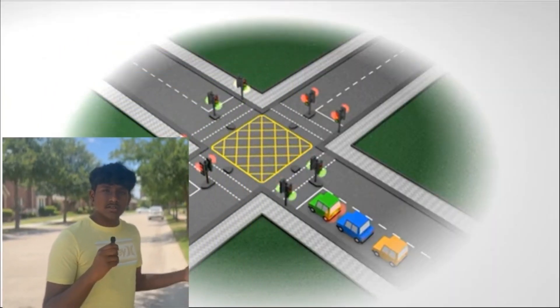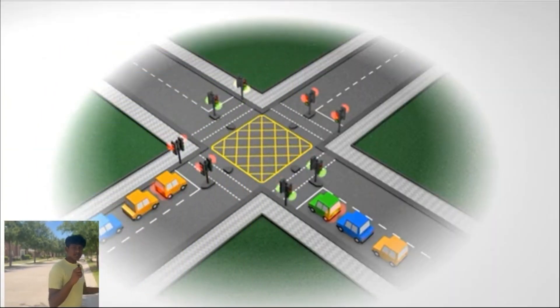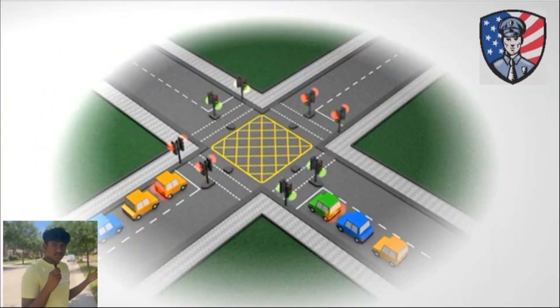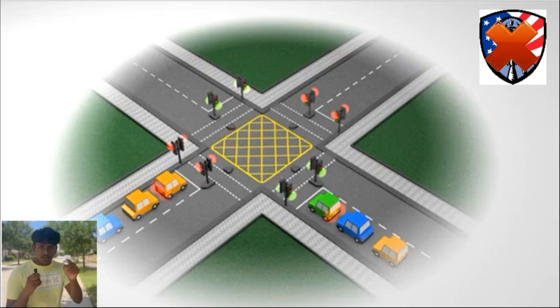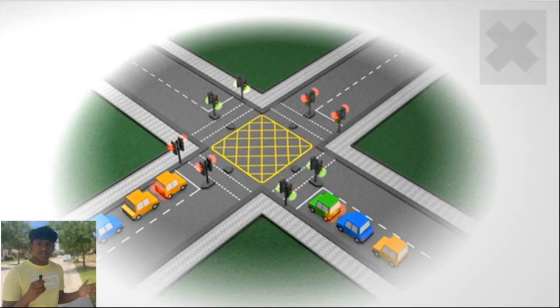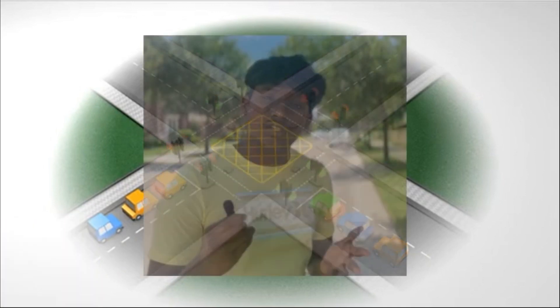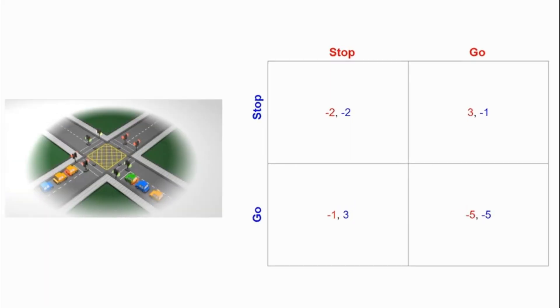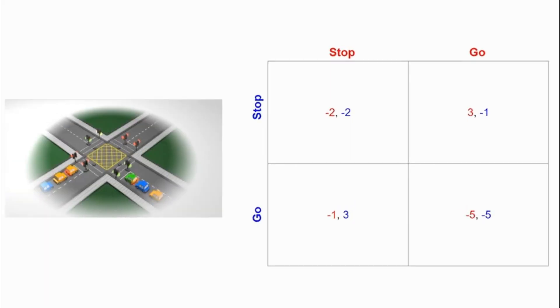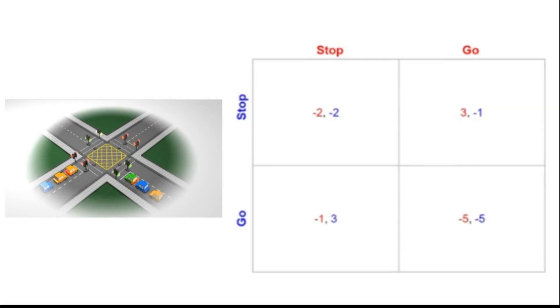Nash equilibrium occurs when a strategy change is not beneficial for each player. For instance, when looking back at our example, let's imagine there's no enforcement laws on a stoplight, meaning your choice directly correlates to whether you want to save time or not. Would you still respect the stoplight rules? First, we can graph all our players' strategies in a payout matrix, which helps us analyze each player's payout for following a specific strategy.